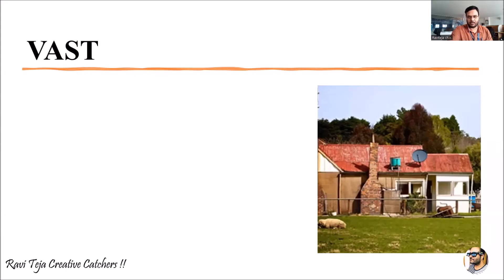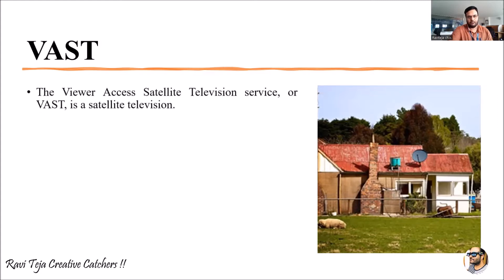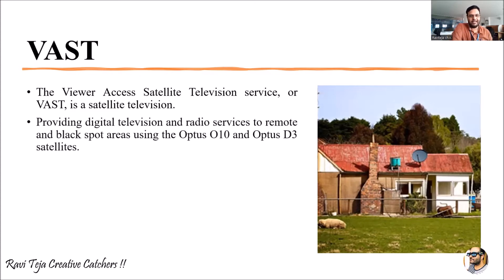Welcome to the course on satellite communications. In today's session we are going to learn about VAST — Viewer Access Satellite Television Service. VAST is somewhat like a DTH system where we can directly access TV channels or TV services directly from the satellite using a small dish, providing digital television as well as radio services.